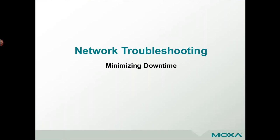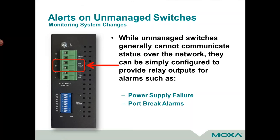Now let's move on to how to minimize downtime and network troubleshooting. Rich mentioned the differences between unmanaged and managed switches, and while a majority of people lean towards managed switches in industrial networks, a lot of people are still using unmanaged switches. One of the biggest questions we get is how unmanaged switches can let you know when there's a problem. Unfortunately, unmanaged switches are very simplistic devices — they typically can't communicate their status over the network the way a managed switch can. However, you can configure the relays on most industrial switches — those relays can be triggered by things like a power supply failure or a port break alarm, and you can tie those to a PLC or other device that has the intelligence to send a message across your network.